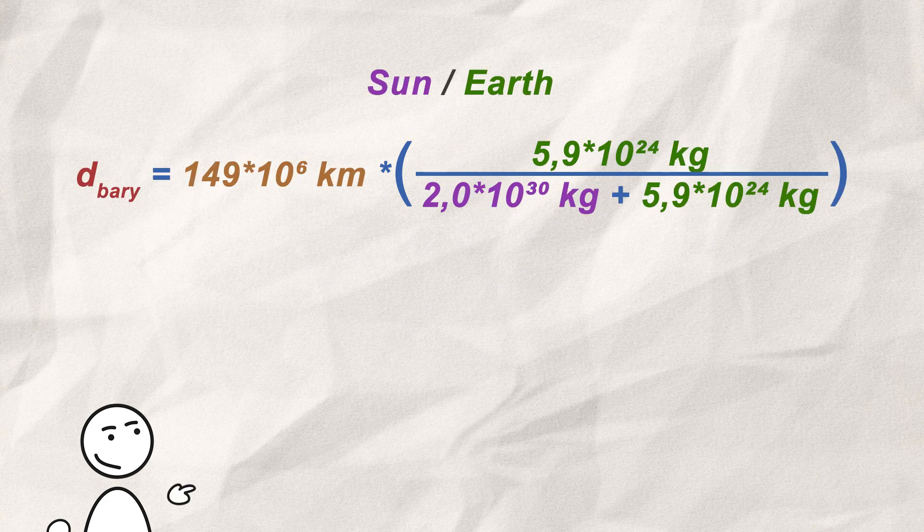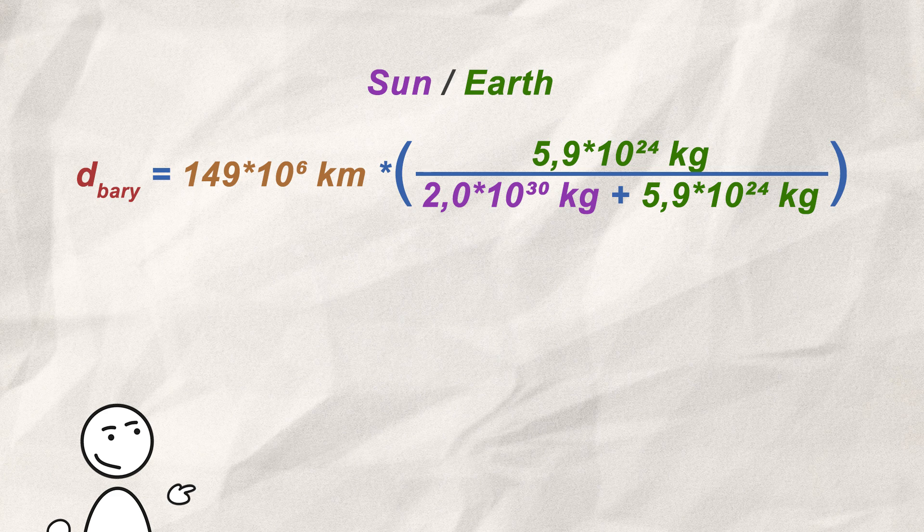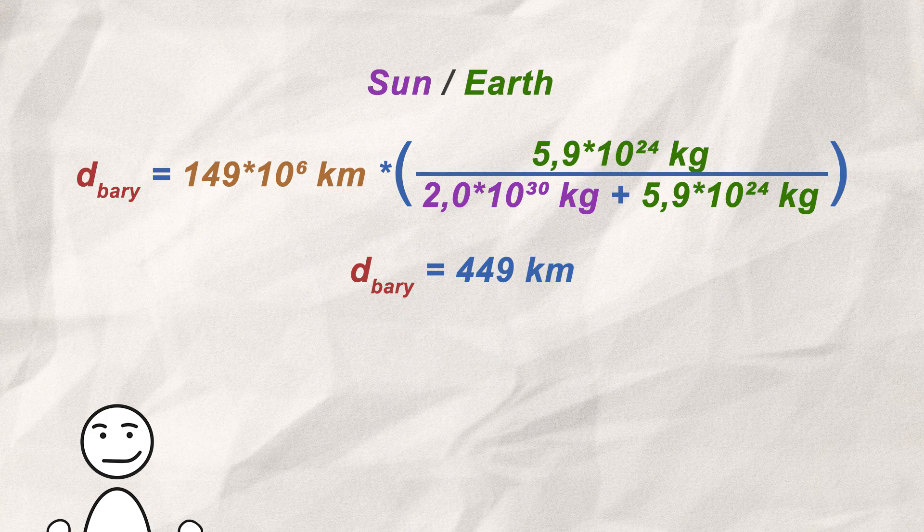Putting in the numbers, we can see that the shared barycenter of the Sun and the Earth is about 449 kilometers away from the center of our Sun. So they wobble around each other, but the Earth is still the lesser partner, so yes, the Earth does orbit the Sun, by definition.